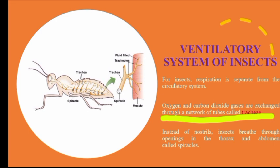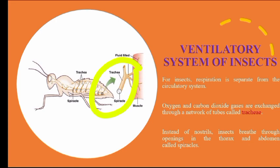There are networks of tubes present here. The oxygen and carbon dioxide gases are exchanged. Insects breathe through openings in the thorax and abdomen. These are called the spiracles, which are the external openings of the tracheal system of insects.